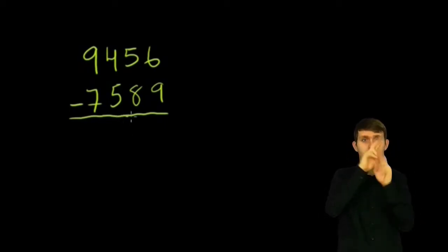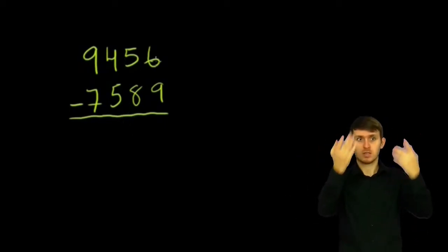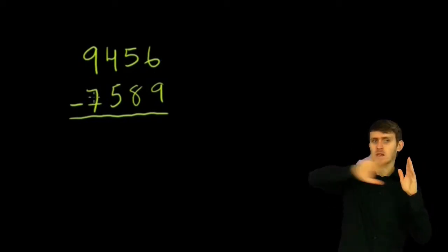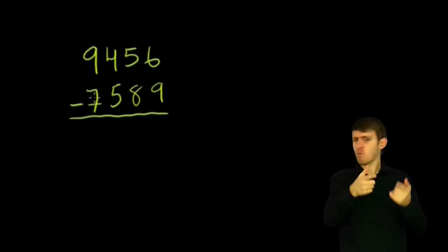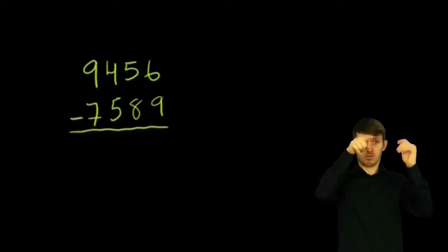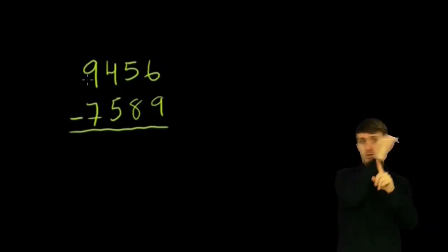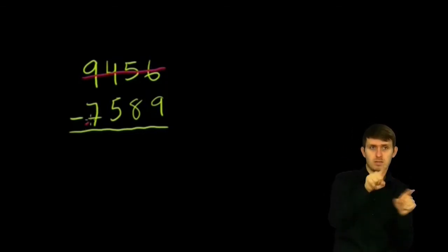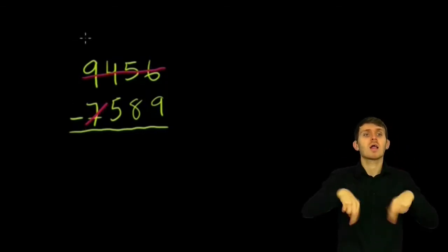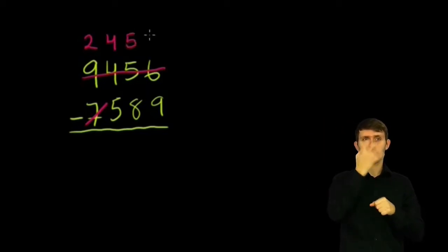So the first thing I do is I say, well, what's 9,456 minus just 7,000? That's pretty easy, because I just take 9,000 minus 7,000. So what I can do is I'll cross out this, and I'll subtract 7,000 from it, and I'm going to get 2,456.